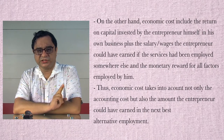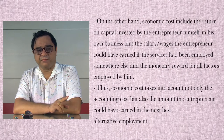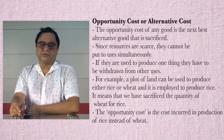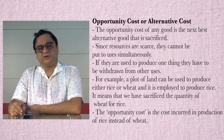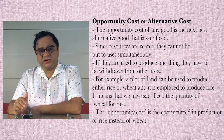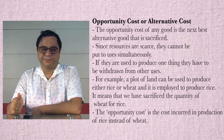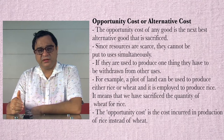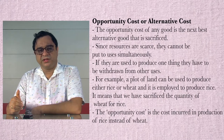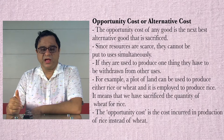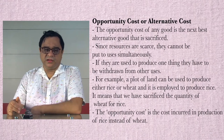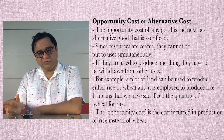Thus, economic costs take into account not only the accounting costs, but also the amount the entrepreneur could have earned in the next best alternative employment. Opportunity cost or alternative cost: the opportunity cost of any good is the next best alternative good that is sacrificed. Since resources are scarce, they cannot be put to uses simultaneously. If they are used to produce one thing, they have to be withdrawn from other uses. For example, a plot of land can be used to produce either rice or wheat; if it is employed to produce rice, it means we have sacrificed the quantity of wheat. The opportunity cost is the cost incurred in producing rice instead of wheat.